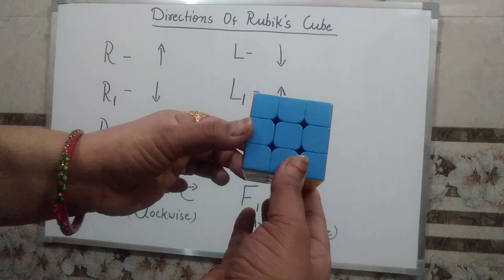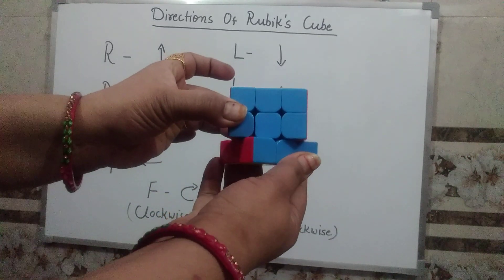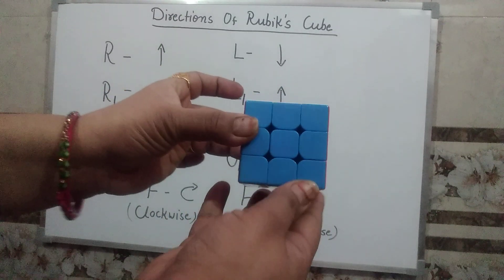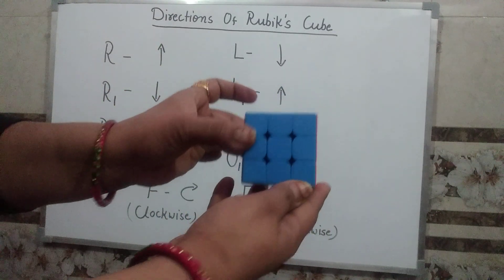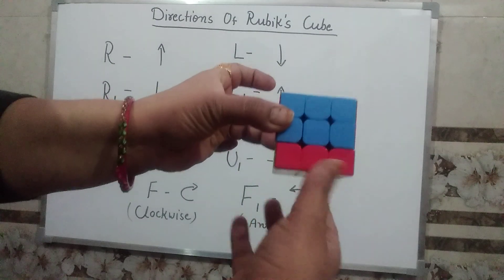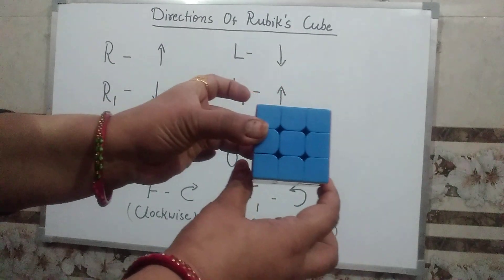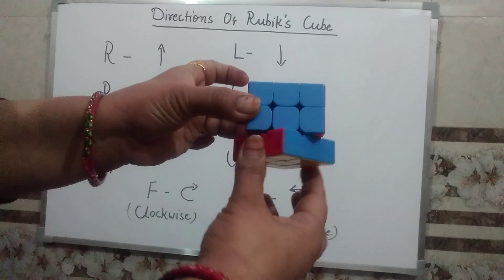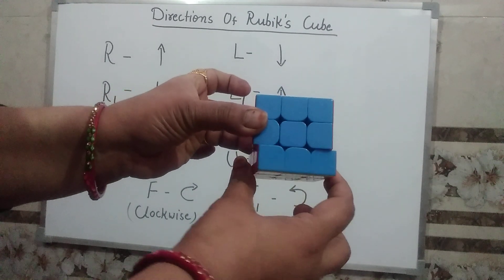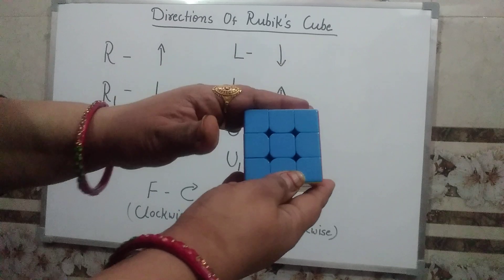Now our next direction is the downside. This is our downside layer, so the directions of the downside layer are: this is D and this is D1. And down is opposite of the upside.